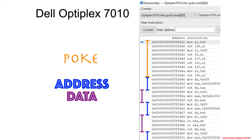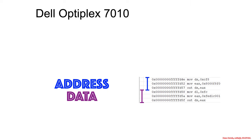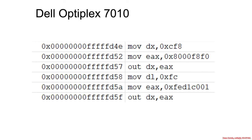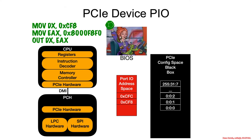Let's go back and drill down a bit more on the Dell Optiplex example. We saw some port IO in address-data style. Let's break it down to just the very first instance of writing to the PCI config address space. Starting with the assembly instructions: CF8 is loaded into the DX register as the output port, and some particular constant is loaded into the EAX register — the 4 bytes that are going to be written to CF8. We just talked about how that's interpreted.